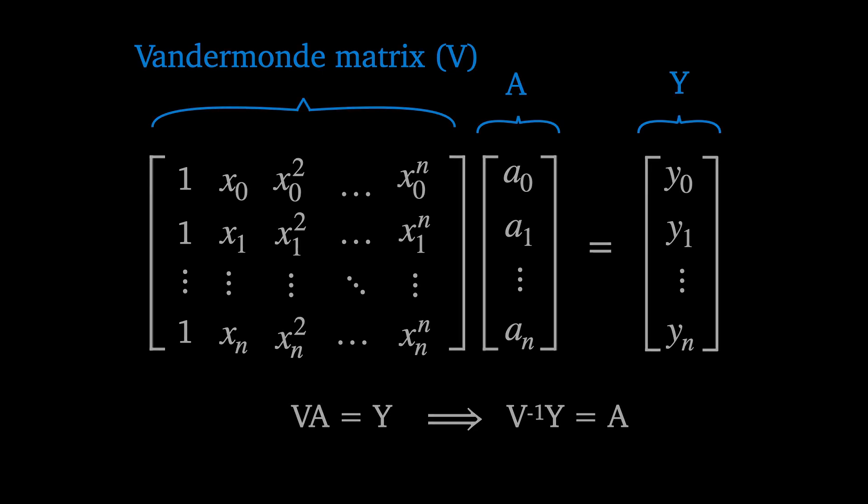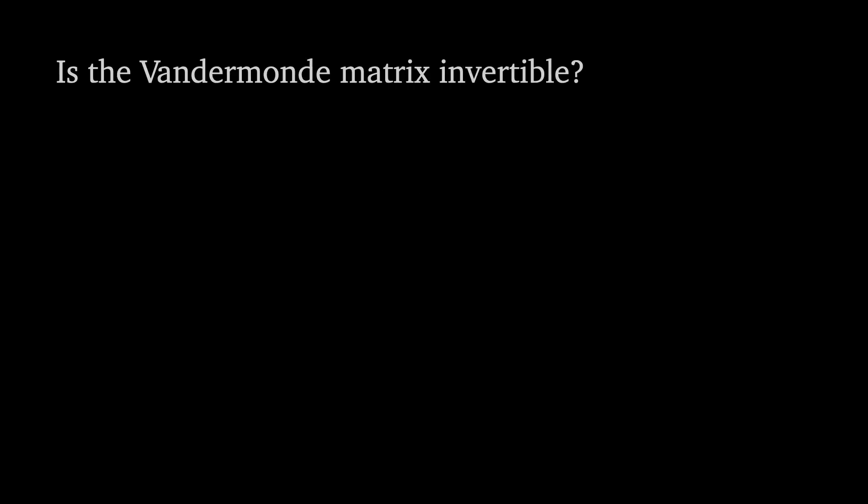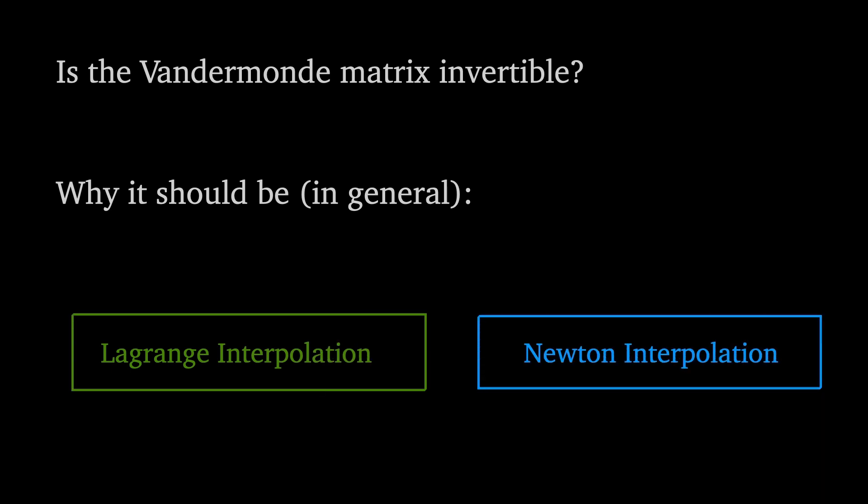The question is then is V invertible? So our question can we find a polynomial which interpolates a set of nodes has become is the Vandermonde matrix invertible? And we have good reason to think it should be. We have methods like Lagrange and Newton interpolation which we know work so how do we prove it?